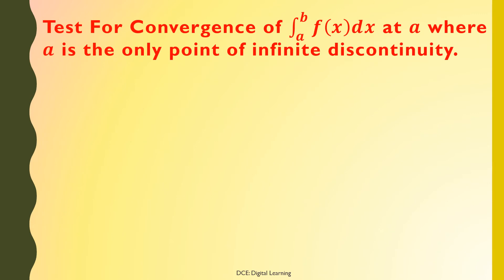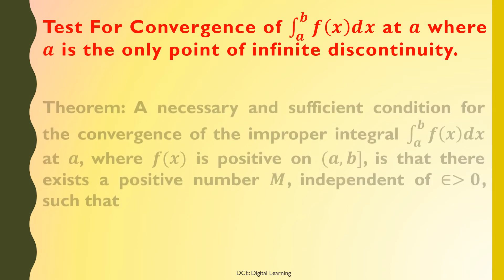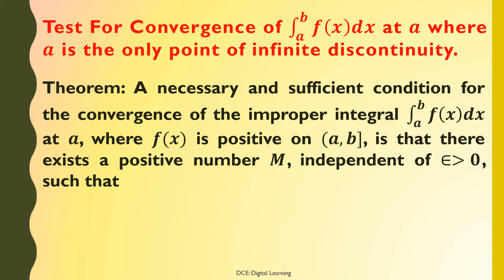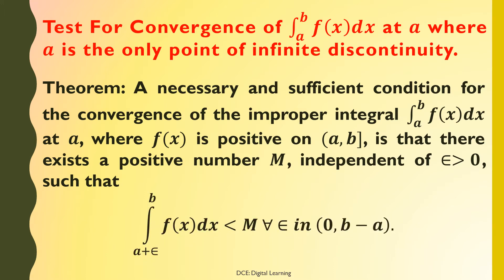Test for Convergence of integral of f(x) dx from a to b at a, where a is the only point of infinite discontinuity. Theorem: A necessary and sufficient condition for the convergence of the improper integral of f(x) dx from a to b, where f(x) is positive on the semi-closed interval (a, b] is that there exists a positive number M independent of epsilon > 0, such that the integral of f(x) dx from a+epsilon to b is less than M for all epsilon in the open interval (0, b−a).